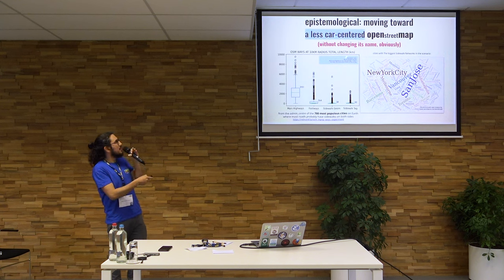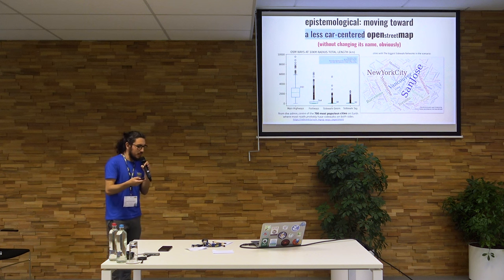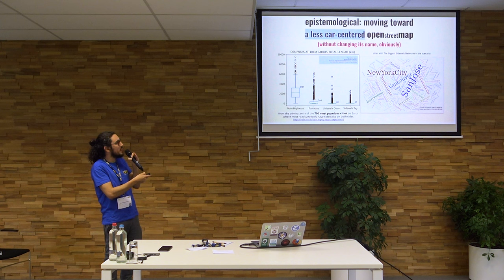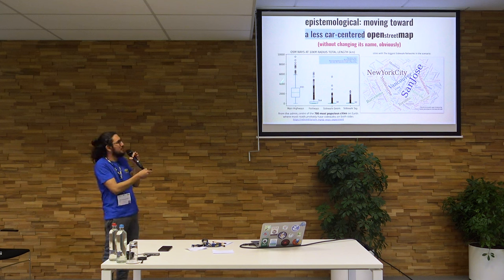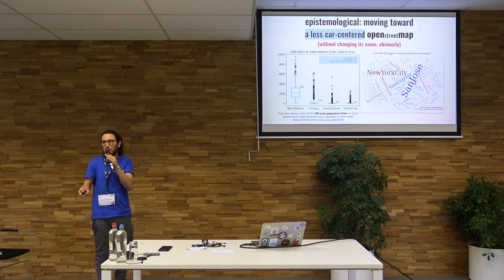And there's also an epistemological motivation: because we want to move toward a less car-centered OpenStreetMap. There is no need to change the name, but in most cities, we have lots of street data but still lacking pedestrian data. And we know that for each road, generally you have sidewalks on both sides, so we have more sidewalks and pedestrian paths than roads in the end.